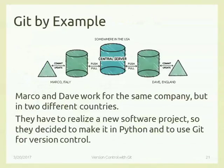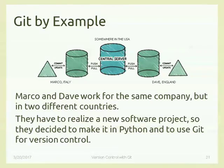We are trying to do something together and see practically how commit, update, push, and pull work — these are the four main primitives for working with a linear sequence of development. It will become more complex when you have different branching with versions going in parallel. But for now, we just imagine two developers — let's call them Marco and Dave — trying to work on the same project.